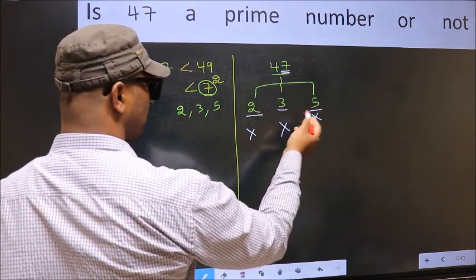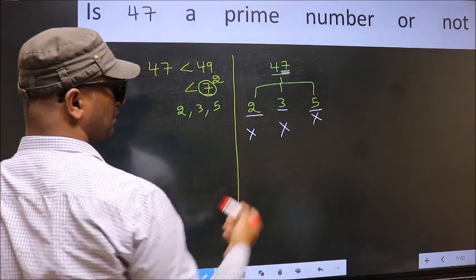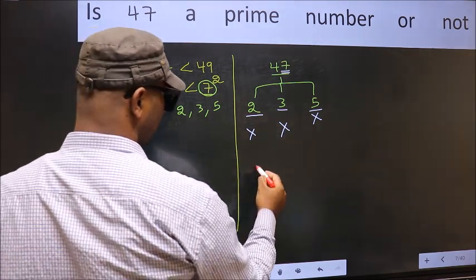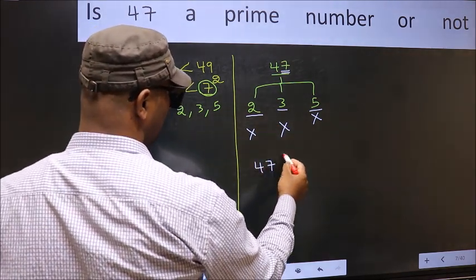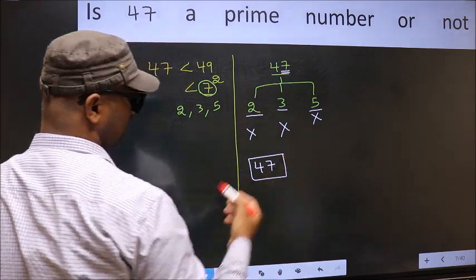So, 47 is not divisible by any of these numbers. Hence, 47 is a prime number. Here we go.